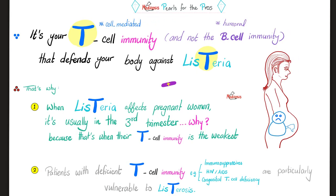Medicosis pearls for the pros: it is your T-cell immunity — hashtag cellular or cell-mediated immunity — and not your B-cell immunity, i.e. not your antibodies, that defend your body against listeriosis. Two facts from this: Fact one — listeriosis in pregnant women occurs in the third trimester because that's when T-cell immunity is weakest. Fact two — patients with defective T-cell or cell-mediated immunity, or problematic T-lymphocytes, are vulnerable to Listeria infections.